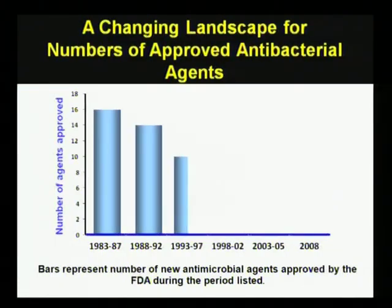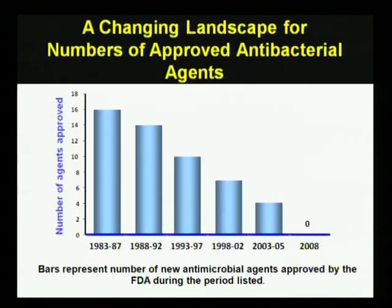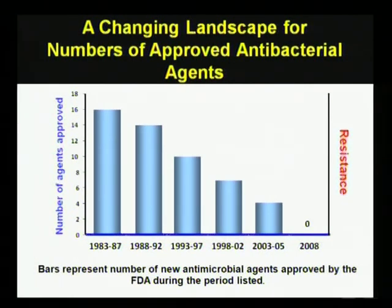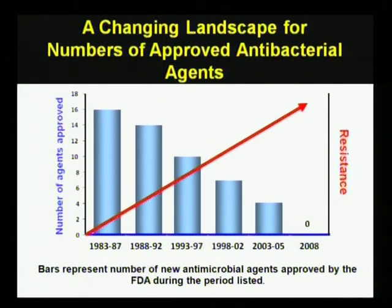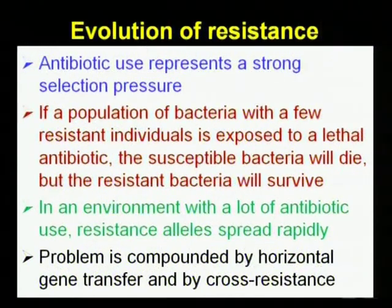As we can see in the graphical representations, the landscape is changing for the number of approved antibacterial agents. During 1983 to 1987, the left-hand bar shows the highest number of approved agents. But as 2003–2005 and 2008 came, no new antibacterial agents were approved because of drug resistance. The red line shows the increase in resistance, while the bars show a decrease in approvals.